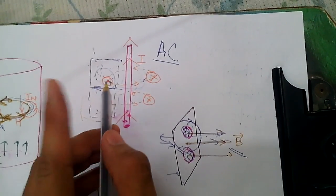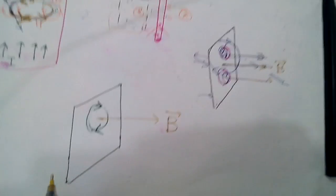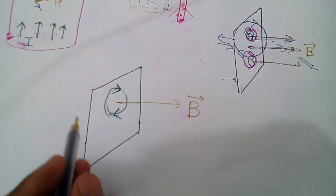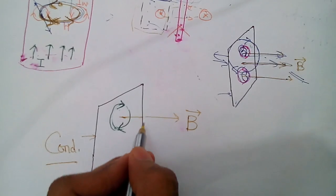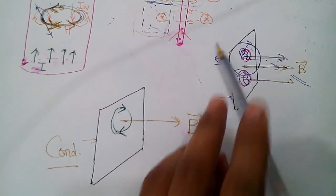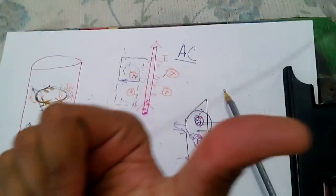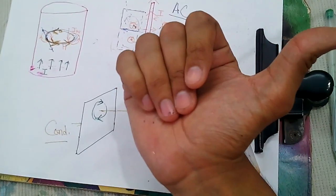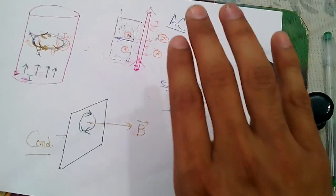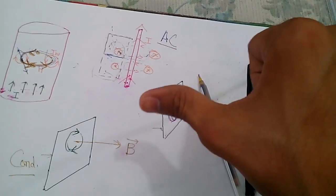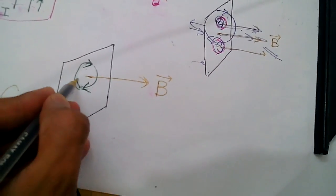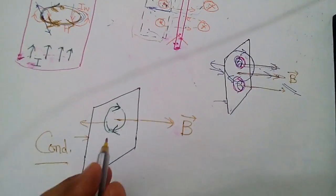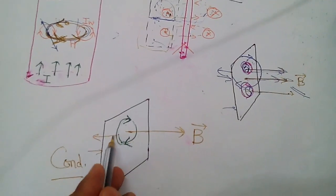Let us explore the direction of eddy current. If the magnetic field is increasing in a particular direction, the eddy currents are introduced in such a way that they produce a counter magnetic field opposing the increase. The direction of that eddy current follows the right-hand rule, and these eddy currents produce a back EMF opposing the original magnetic field.